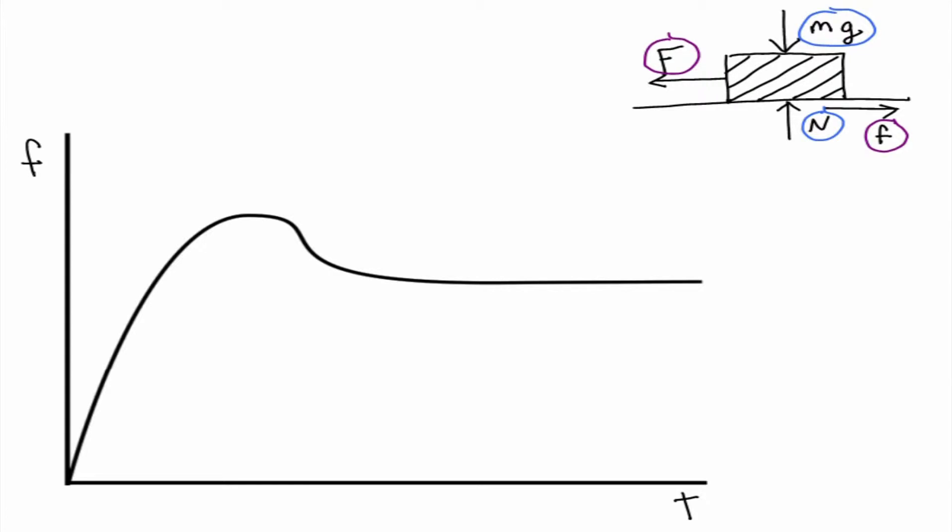Now through Newton's second law, we can derive that our normal is going to be equal to our weight. So our friction force equation is going to be equal to mu times mg.